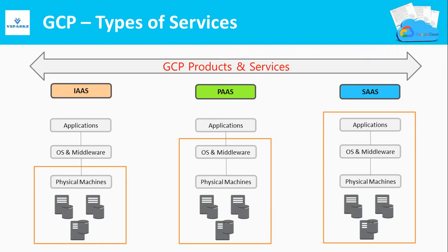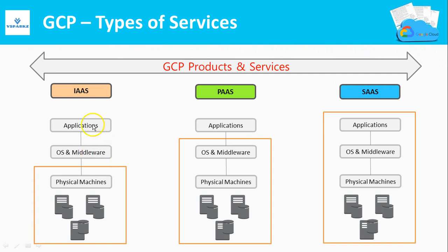Types of services offered by GCP: GCP is a computing solution platform that offers IaaS (Infrastructure as a Service), PaaS (Platform as a Service), and SaaS (Software as a Service) products. The red lines highlighted in the diagram indicate items taken care of by Google; the rest should be taken care of by you. For example, in an IaaS model, if you take a virtual machine from the cloud, its hardware and physical machines will be managed by Google. However, you have to take care of your operating systems, patching, upgradation, middleware, and applications. Google will not be held responsible for these things in this model.